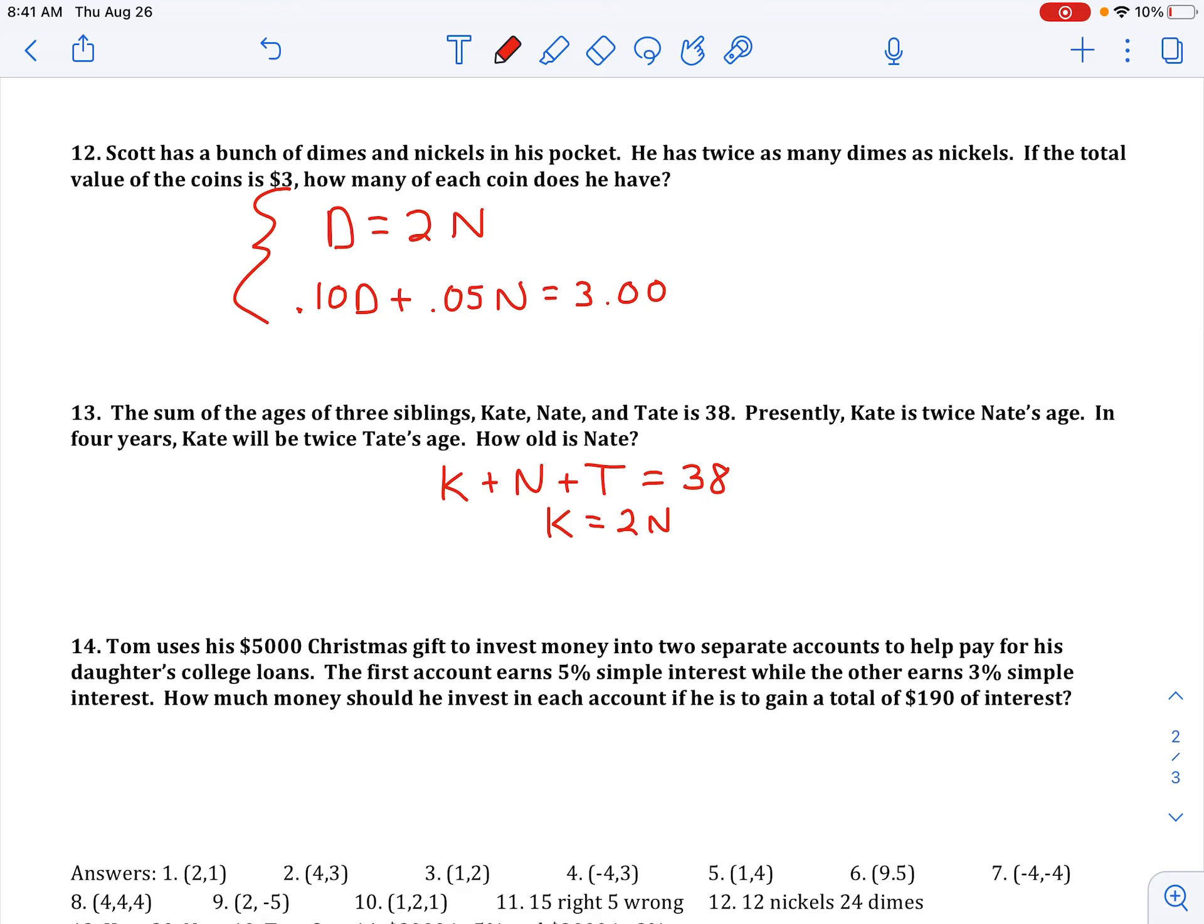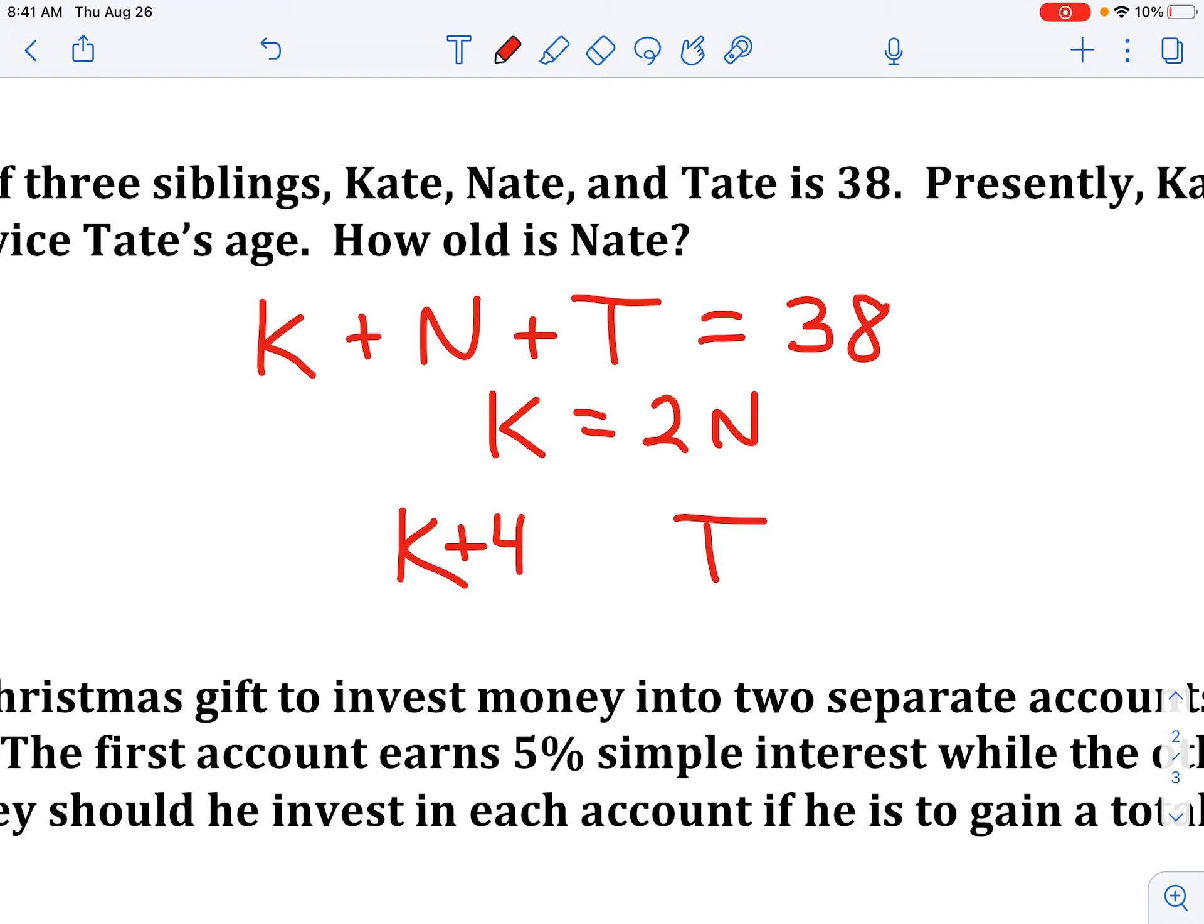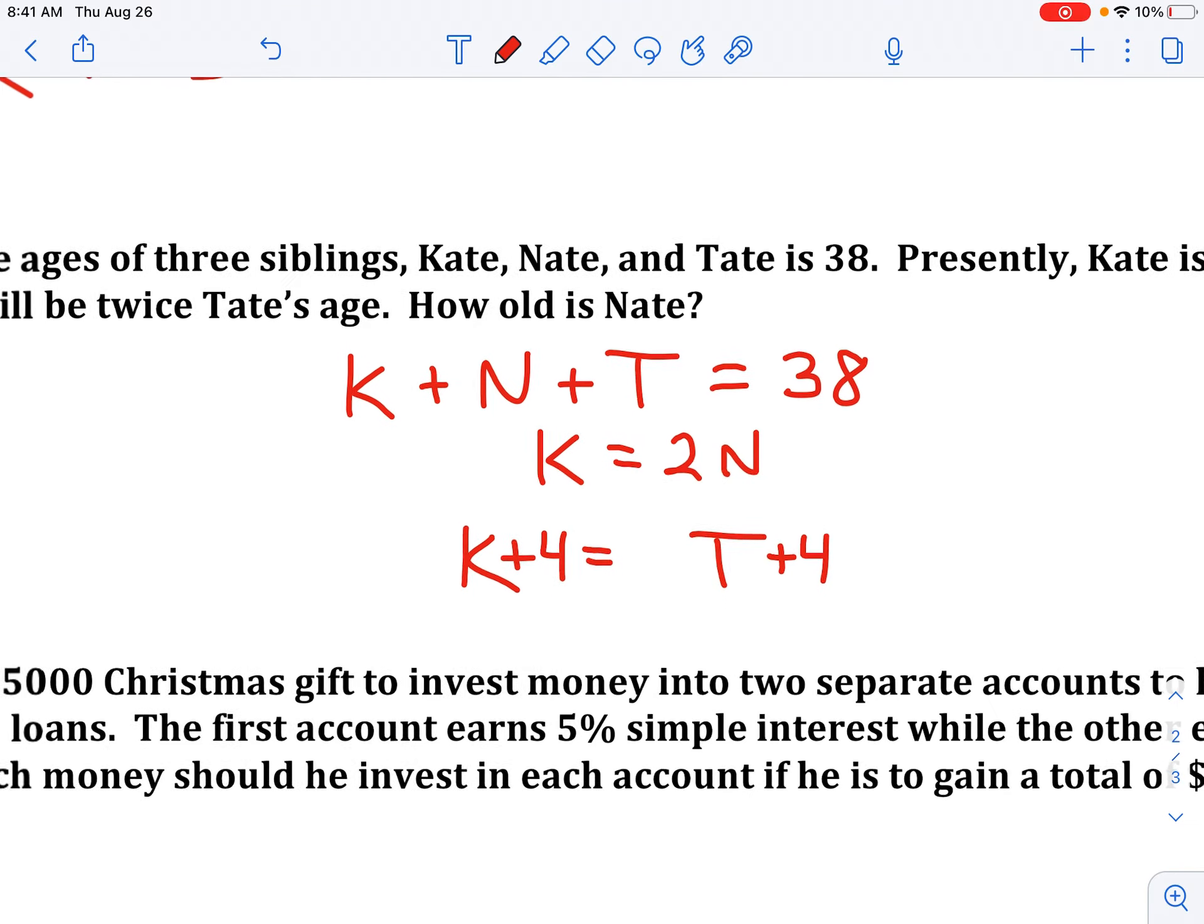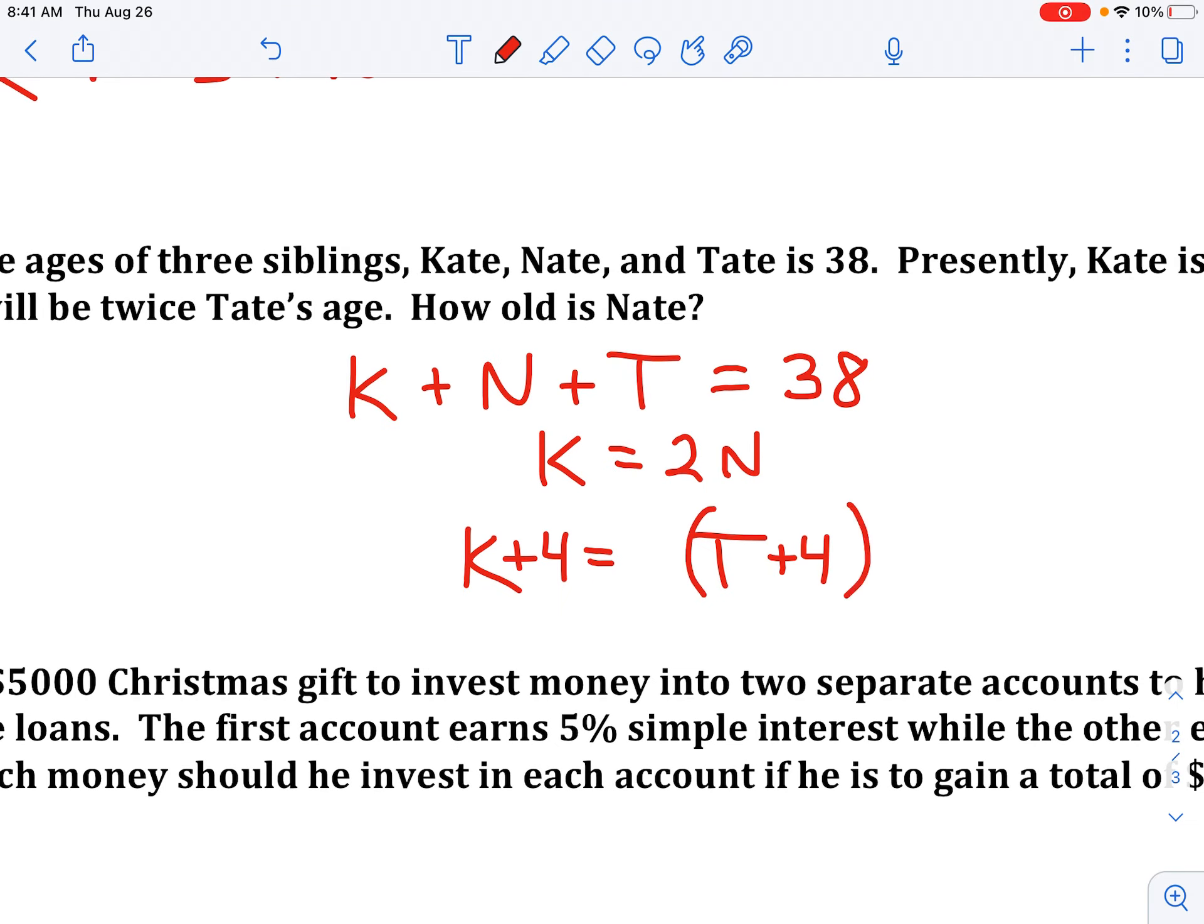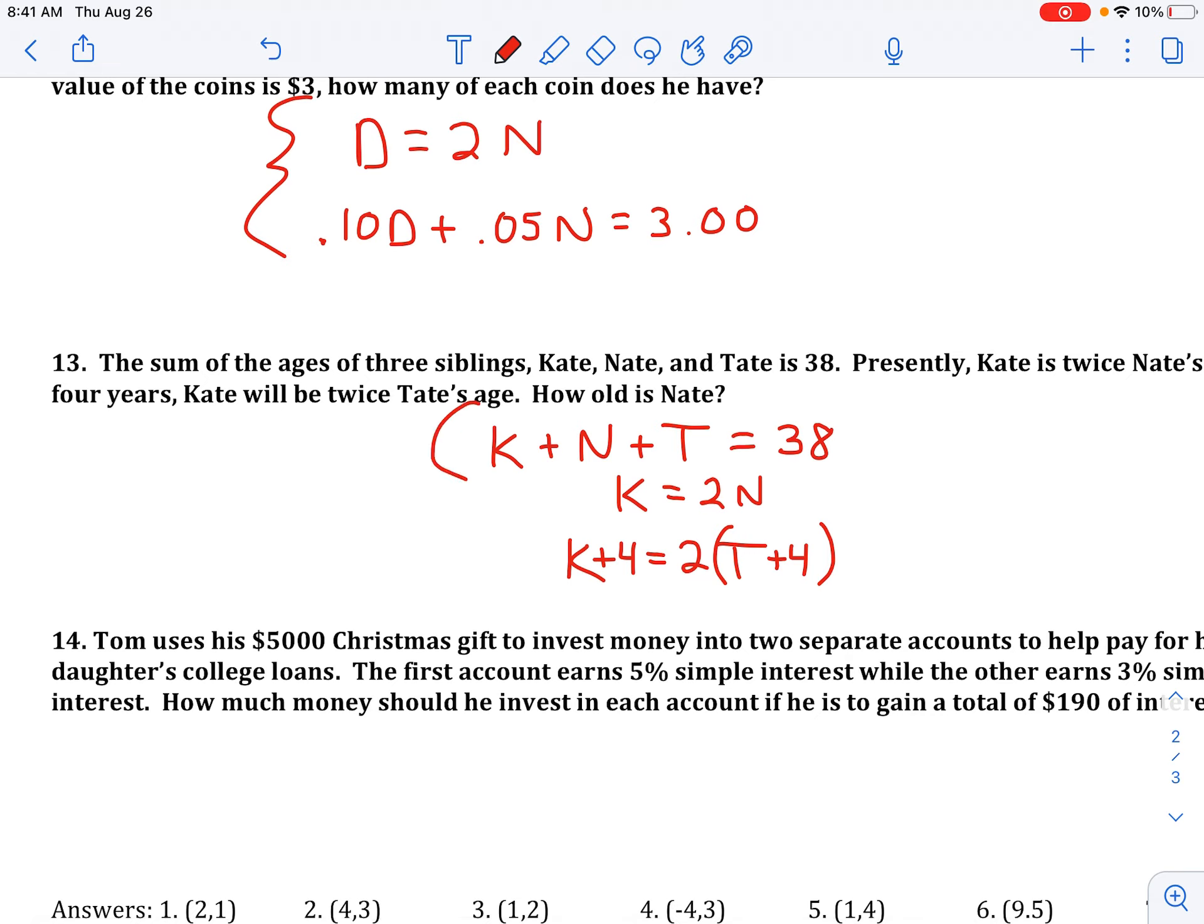And the last part gets kind of tricky. It says in four years Kate will be twice Tate's age. So here's Kate and here's Tate. And in four years Kate is going to be Kate plus 4, and in four years Tate is going to be Tate plus 4. And in four years Kate is twice Tate's age. And so that last equation is kind of tricky there.